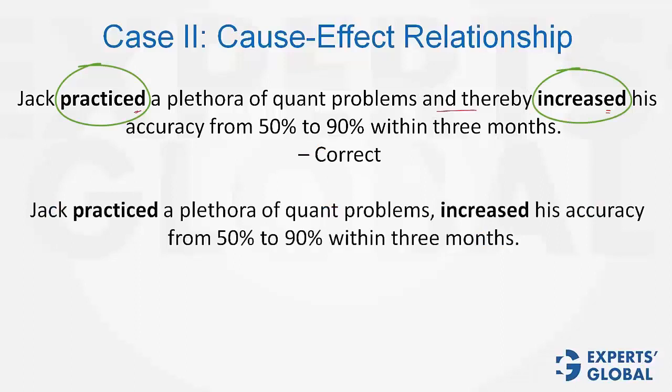Remember, it is this sentence where the exception has to apply. Jack practiced a plethora of quant problems is the cause, and there is a comma, and then the effect starts. Practiced and increased should not have the same verb forms, because one is the cause and the other is the effect.